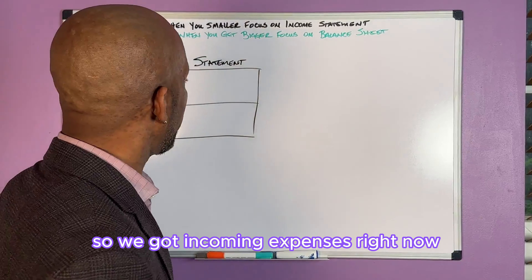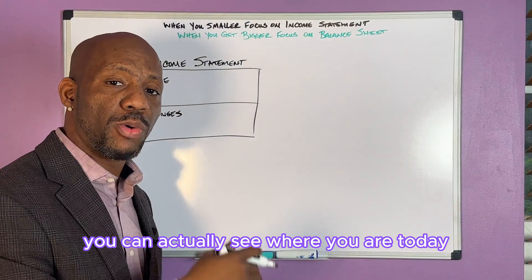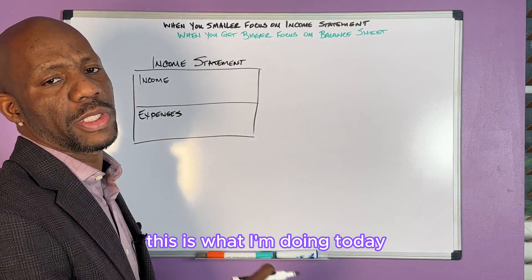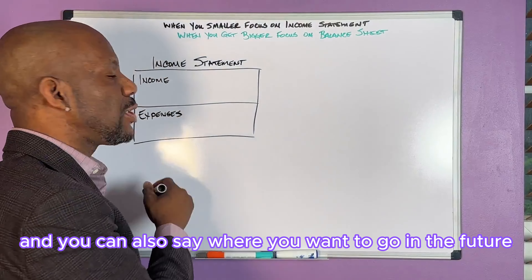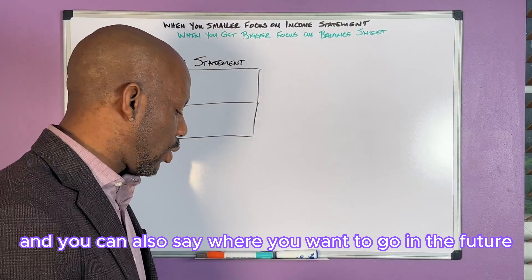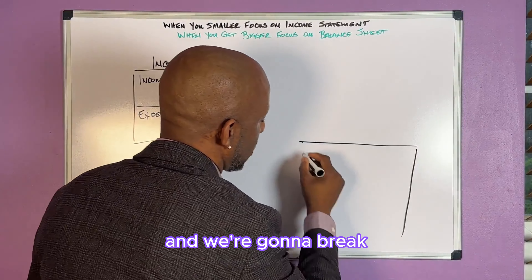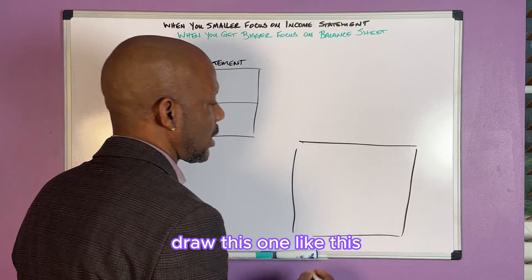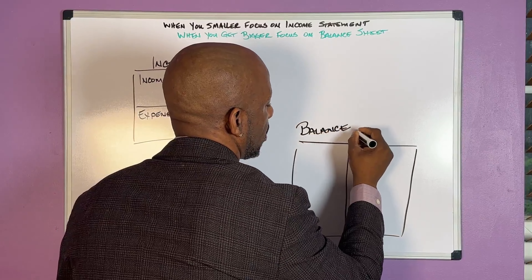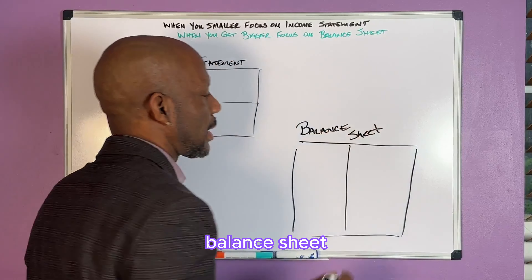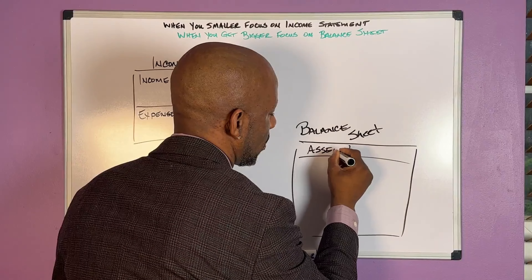In these boxes you can do a couple of things. You can see where you are today — say, 'this is what I'm doing right now' — or you can say where you want to go in the future. Now let's draw this other box and call it a balance sheet. A balance sheet tells you what you have as assets and liabilities.